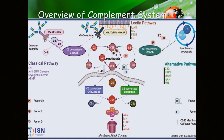While each pathway is unique in its activation, they all converge to C3b — the central amplification step — which ultimately leads to priming the membrane attack complex, causing tissue injury. Other effectors cause chemotaxis and activation of antigen-presenting cells. C3a and C3b cause podocyte injury, while C5a and C5b cause T cell activation, maturation of B cells, and also reduce insulin sensitivity in adipose tissue.